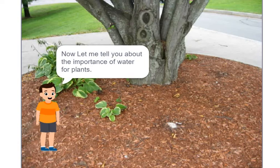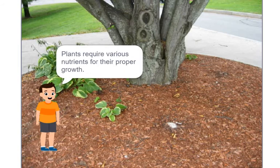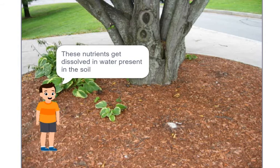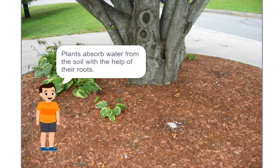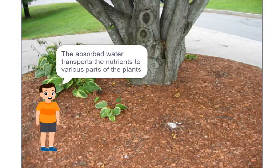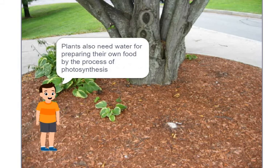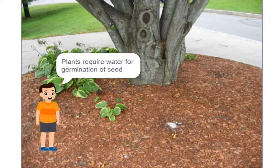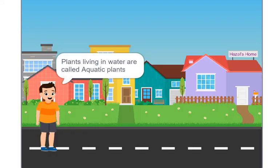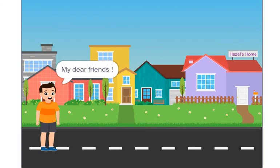Let me tell you about the importance of water for plants. Plants require various nutrients for their proper growth. These nutrients get dissolved in water present in the soil. Plants absorb water from the soil with the help of their roots. The absorbed water transports the nutrients to various parts of the plant. Plants also need water for preparing their own food by the process of photosynthesis. Plants require water for germination of seed. Plants living in water are called aquatic plants.